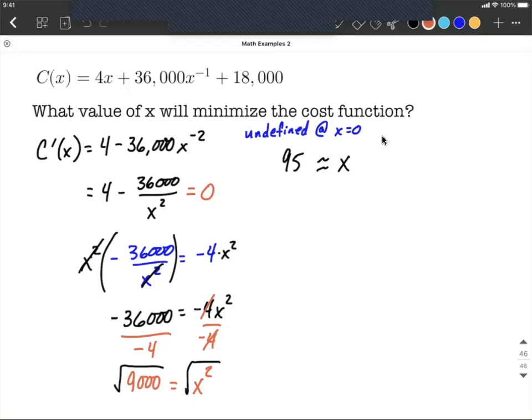Okay so both of these work out to be critical numbers and places where we may have a maximum or minimum. Let's look at that 95 and use the second derivative test to double check to make sure it's going to be where a minimum occurs. So second derivative test. We'll first need to calculate the second derivative, c double prime of x, and to do so I'm going to go back to this first version of the first derivative. So the 4 minus 36,000 x to the negative second power.